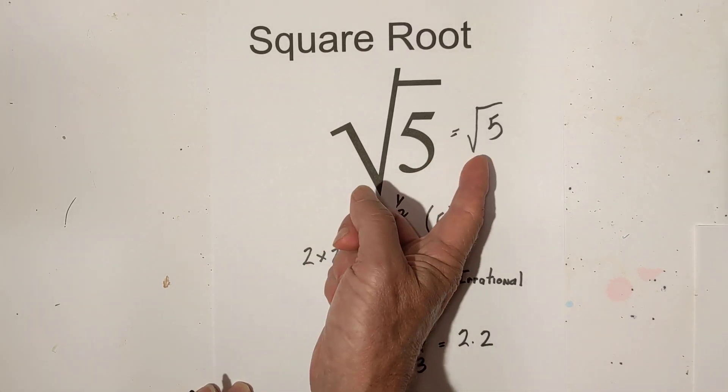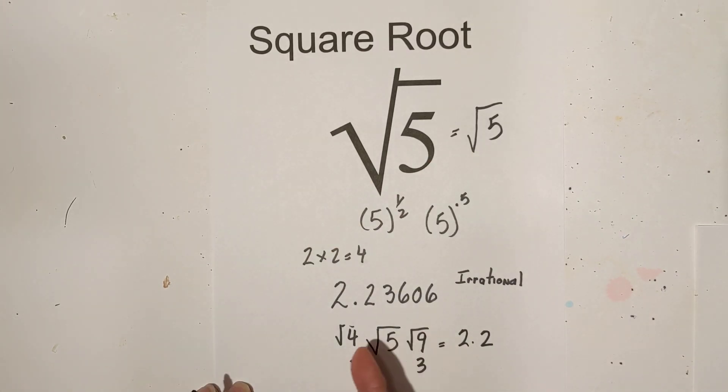Okay, so in summary, simplified, it's the square root of 5. Decimal form, 2.23606. It's an irrational number. And then if you want to estimate it, it's somewhere between square root of 4 and square root of 9, which is 2 and 3, and it's going to be roughly 2.2.